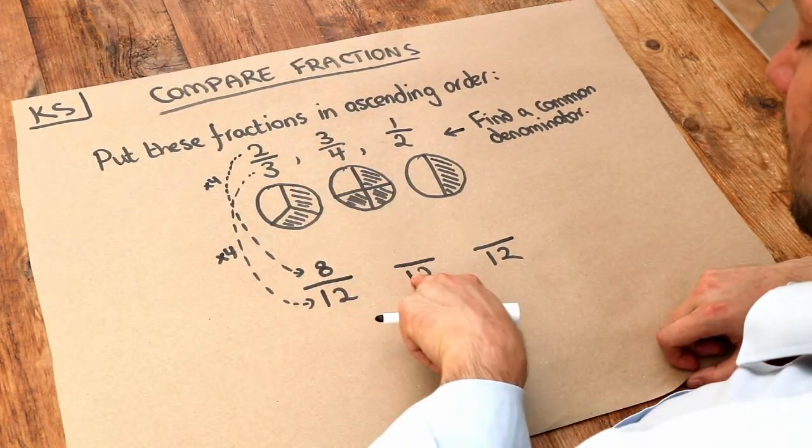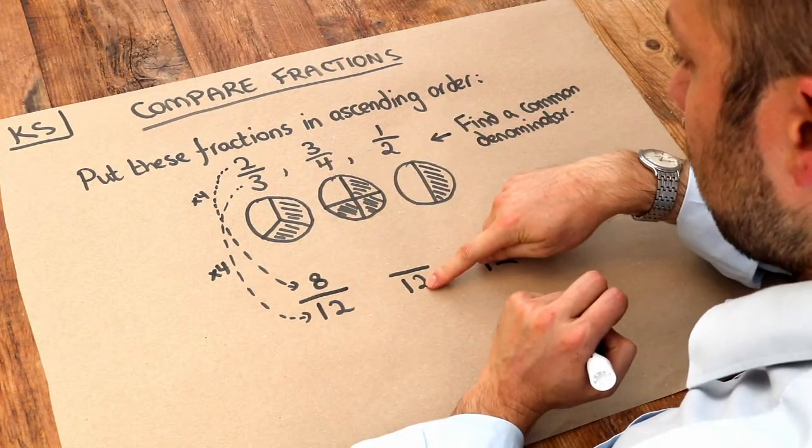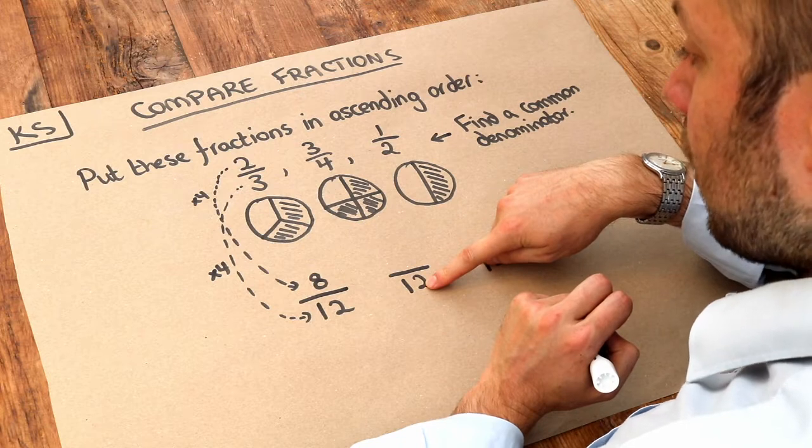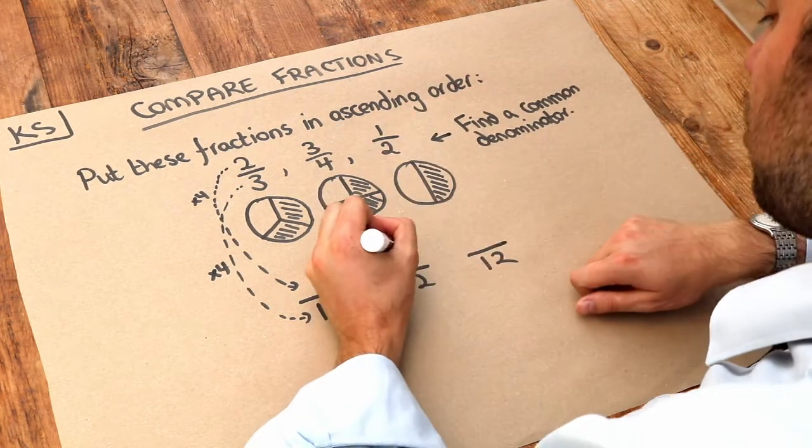Three-quarters, that's the same as how many twelfths? Well, to get from four to twelve we have to times by three. So therefore the three we also have to times by three, and that gives you nine.